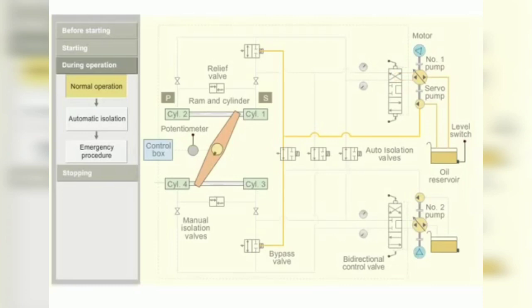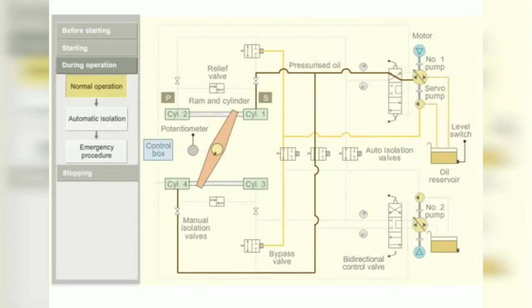The pressurized oil is pumped into ram 1 and 4. The pressurized oil moves the ram. The tiller in turn moves the rudder stock from the port to starboard position.